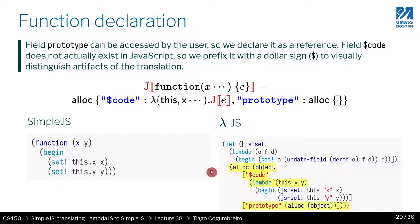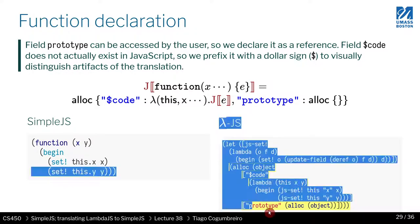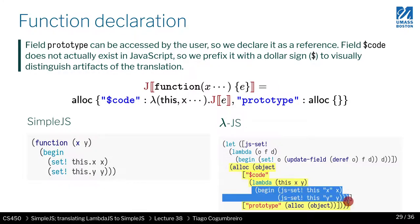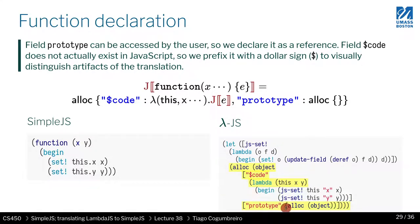What you have to generate is an allocation, and inside that an object creation with two fields. In the first field you create a lambda and inside you perform the recursive translation. In the proto field you simply store a newly allocated empty object.